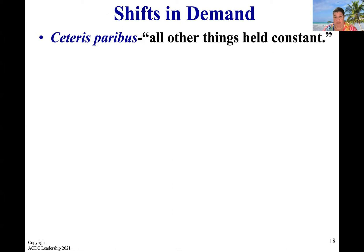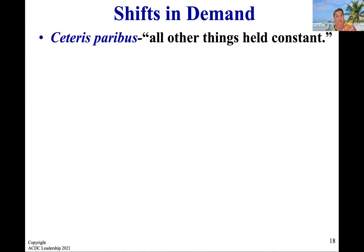Ceteris paribus — a little bit of Latin, which means all other things held constant. How do I remember that? I see the word 'peri' and think of the word paralysis, like nothing can move. Nothing is moving. I think of a paralyzed bus — everything is standing still, nothing else is moving.